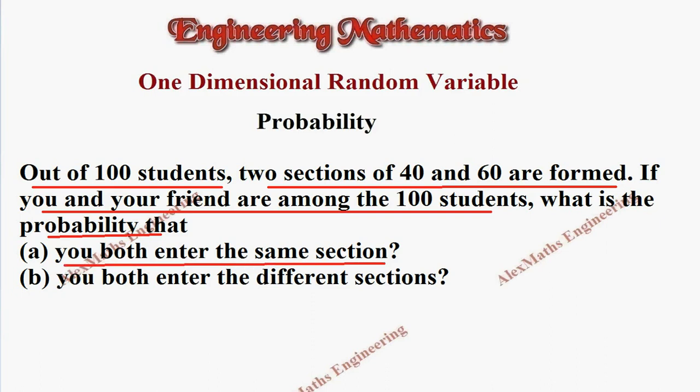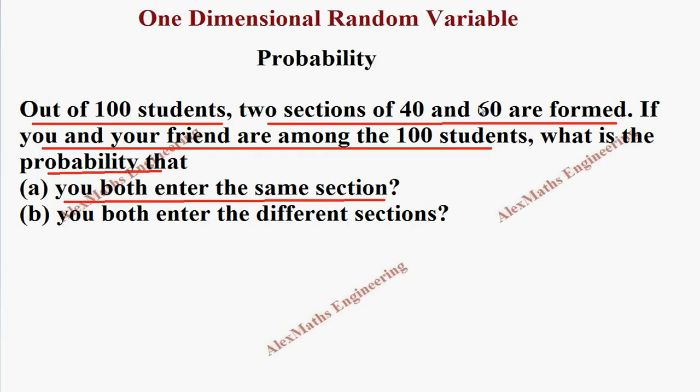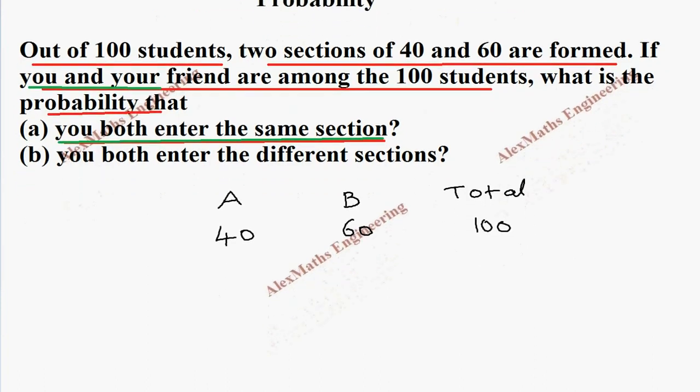We have section A with 40 and section B with 60, for a total of 100. Now two persons - it is given you and your friend - so both enter the same section, either both enter section A with strength 40 or both enter section B with strength 60.